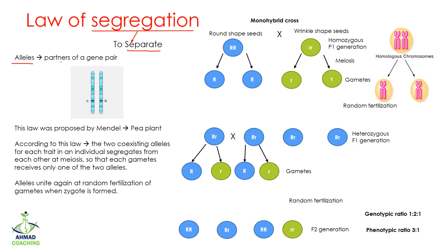Alleles are the partners of a gene pair. A gene is a sequence of nucleotides, or a segment of DNA, which controls a particular trait. That trait can be your eye color, your hair color, your height, or in the case of plants, it can be the height of the plant, the color of their leaf, the shape of their leaf, or the shape of their seed.